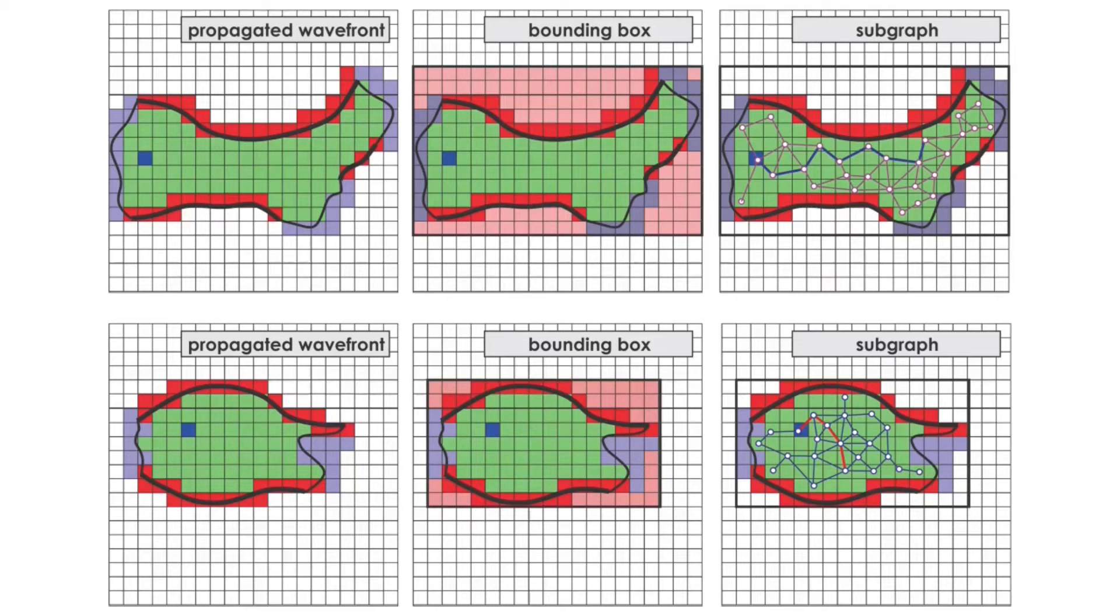Identifying collision-free edges within the submap, the points are then connected to form an undirected graph. This graph is sampled in the submap frame.